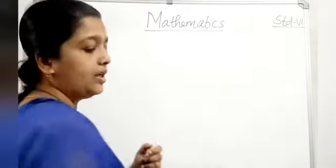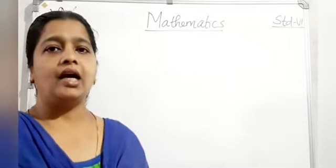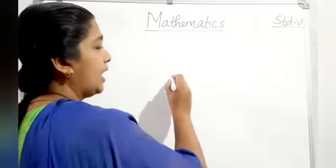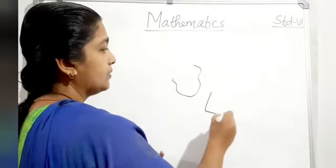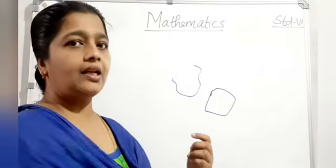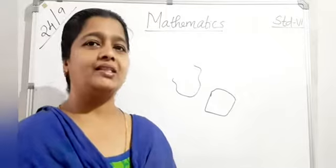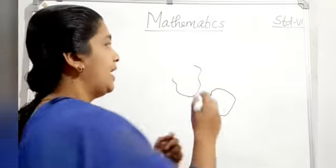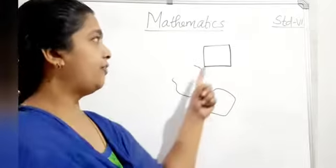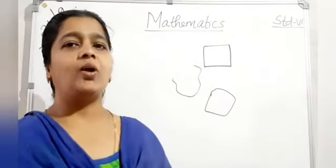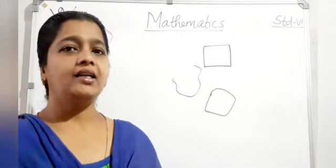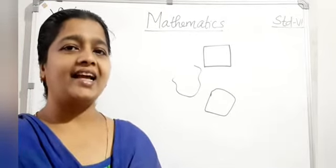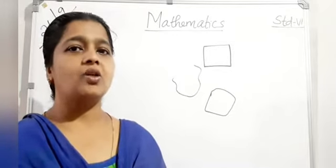Polygons: a polygon is a simple closed curve made up of only line segments. You know the open curve and closed curve. A polygon means only line segments. A three-sided polygon is called a triangle. A four-sided polygon is called a quadrilateral. Five-sided is a pentagon, six-sided is a hexagon, and eight-sided is an octagon.